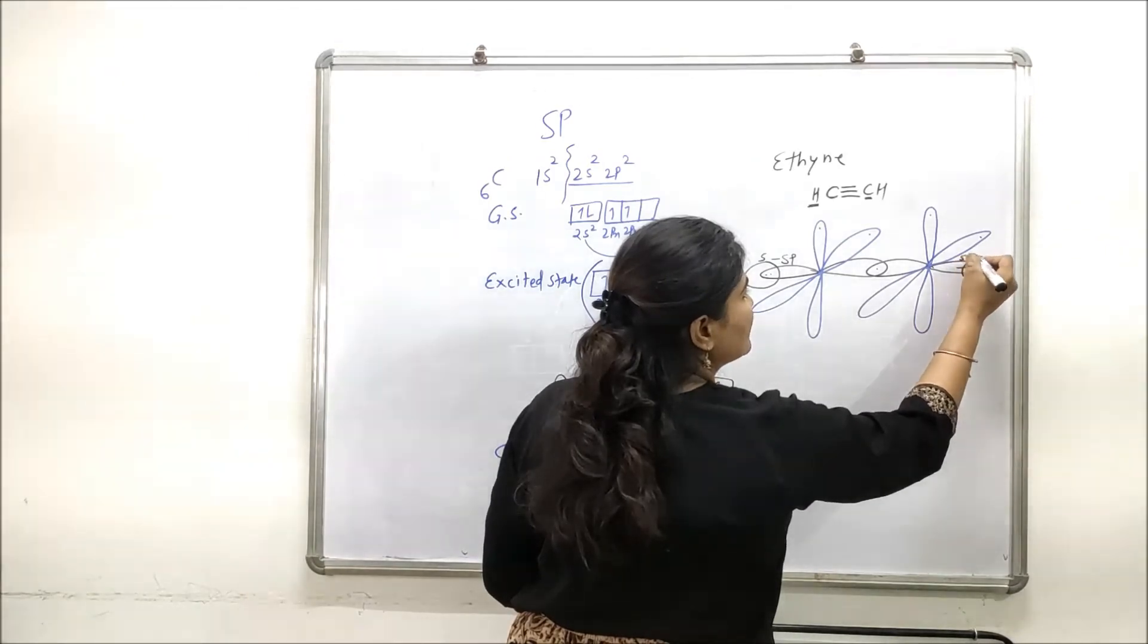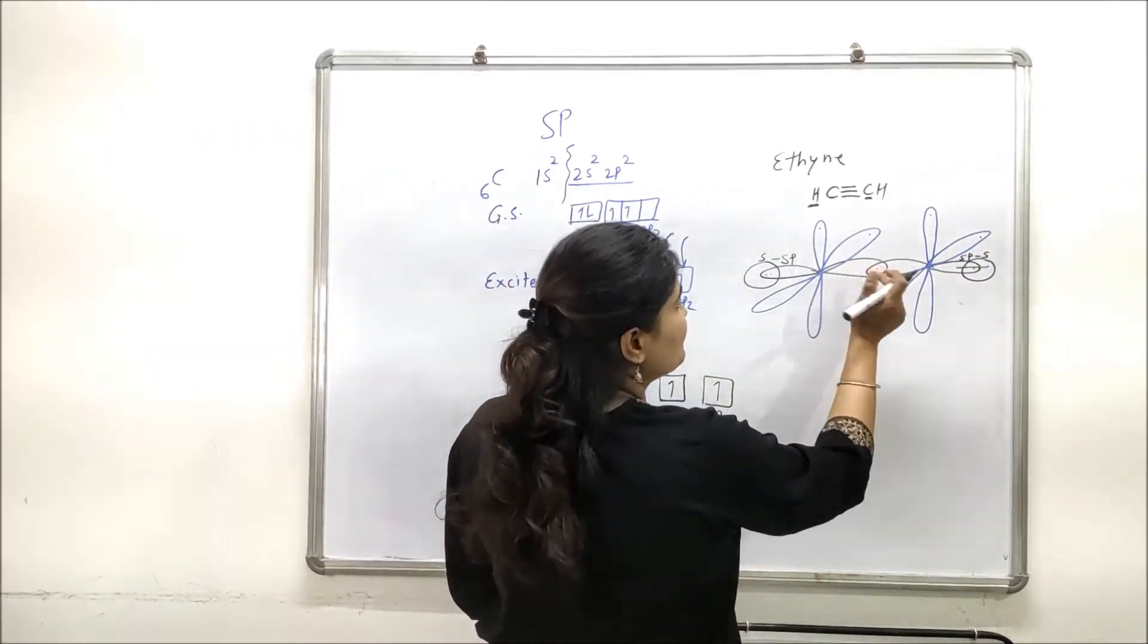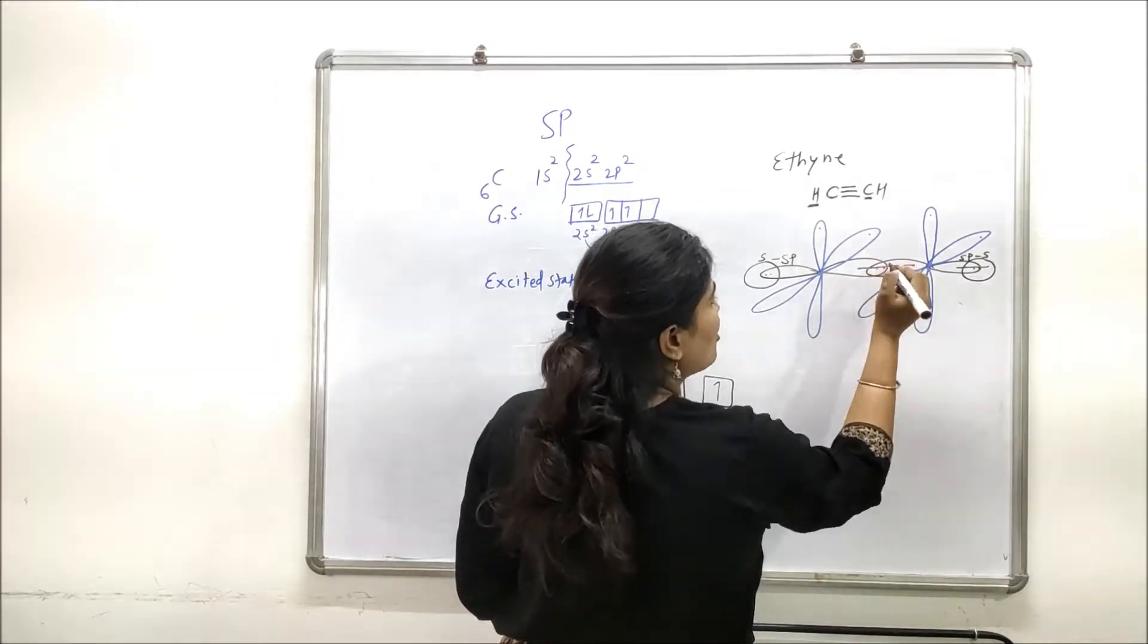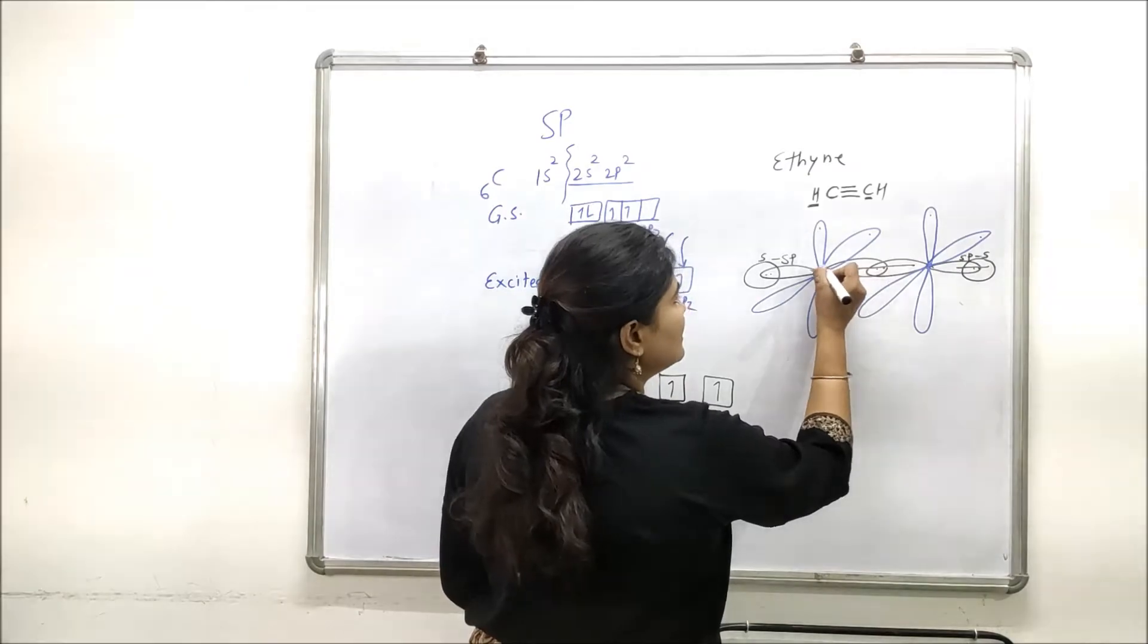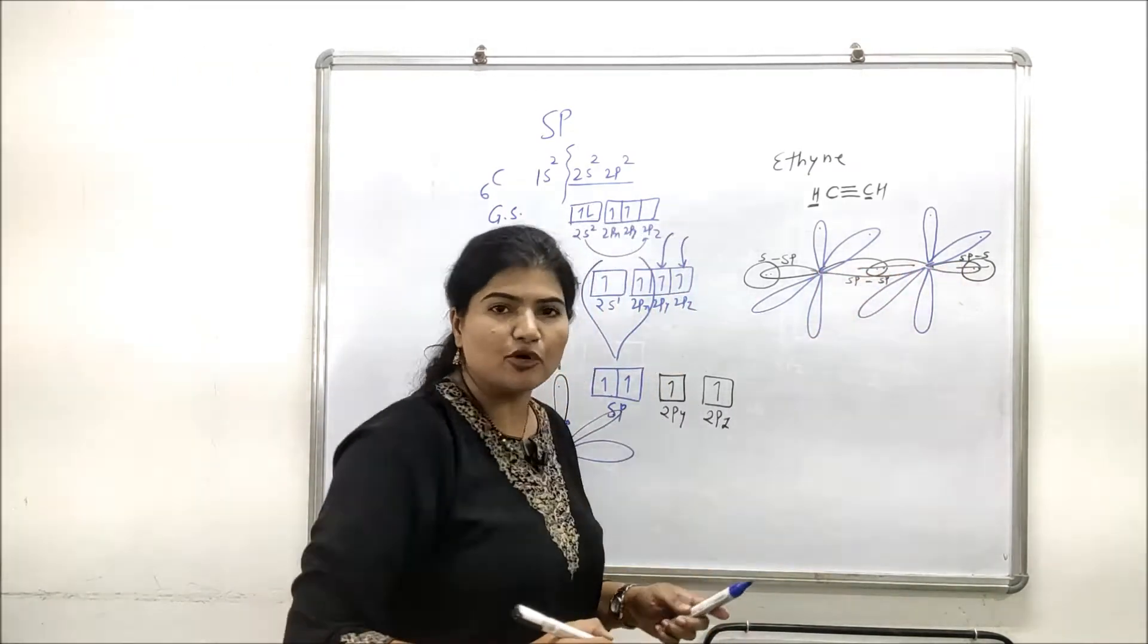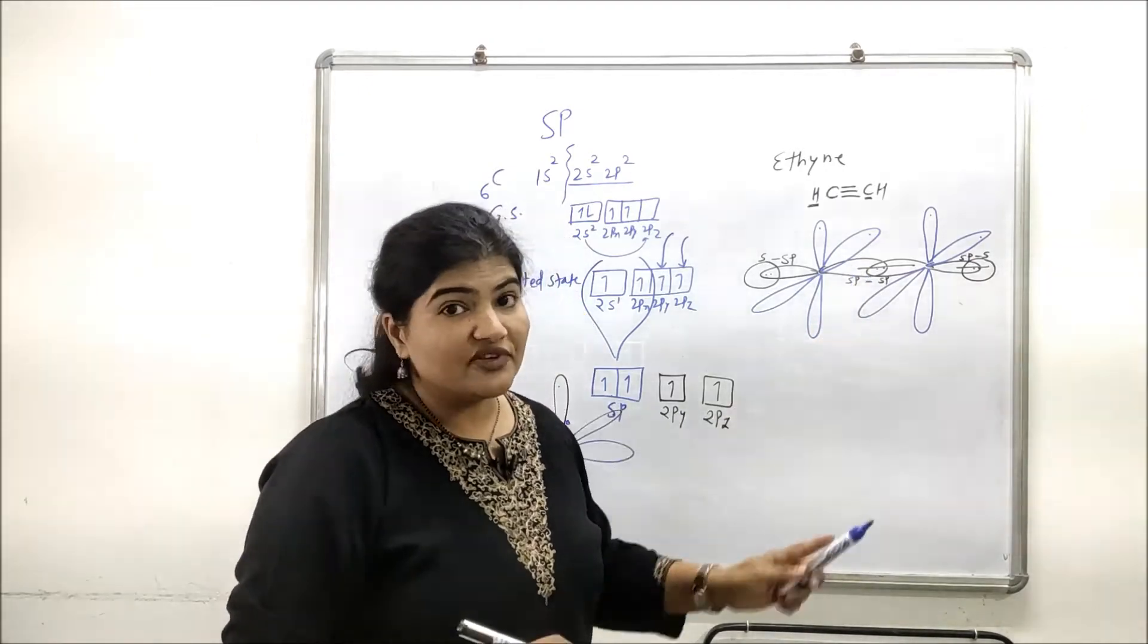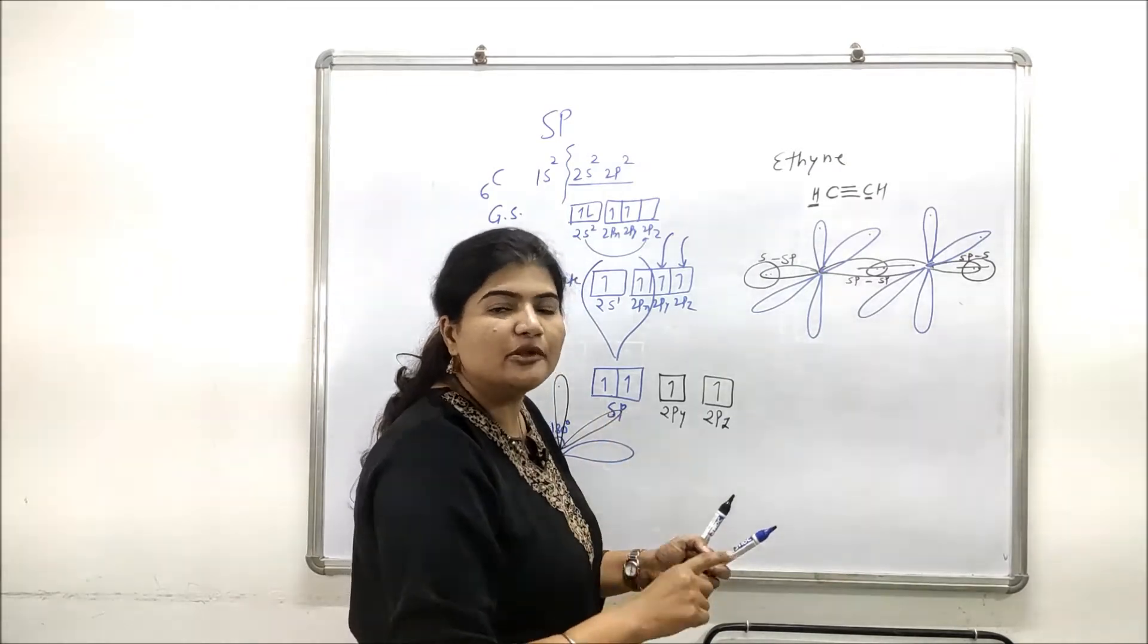The character will be sp-s. For this bond, you can see this is a sigma bond formed by axial overlap of sp of this carbon and sp of this carbon, so sp-sp will be the bond character of this bond. We are talking about the carbon-carbon bond. You can see triple bond here; out of that triple bond, only one bond is formed by axial overlap, which is a sigma bond.